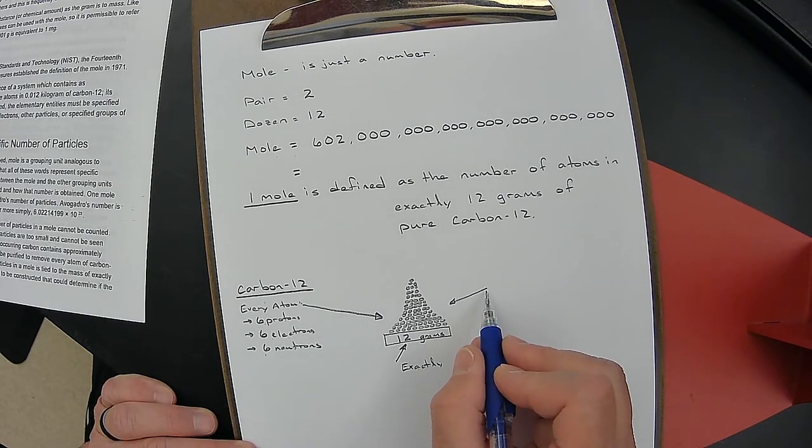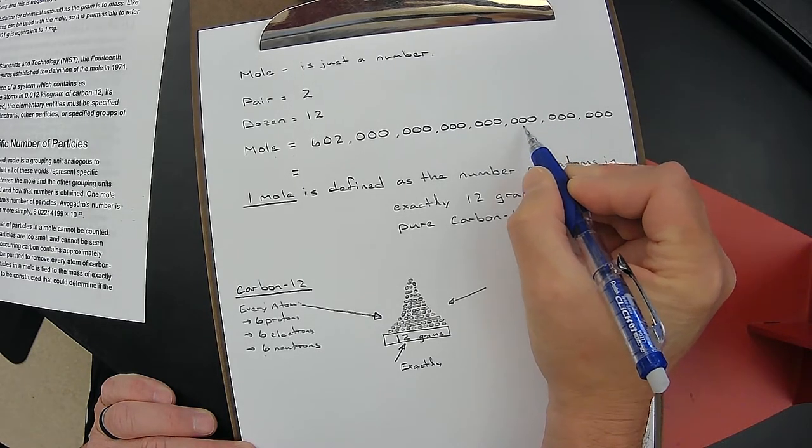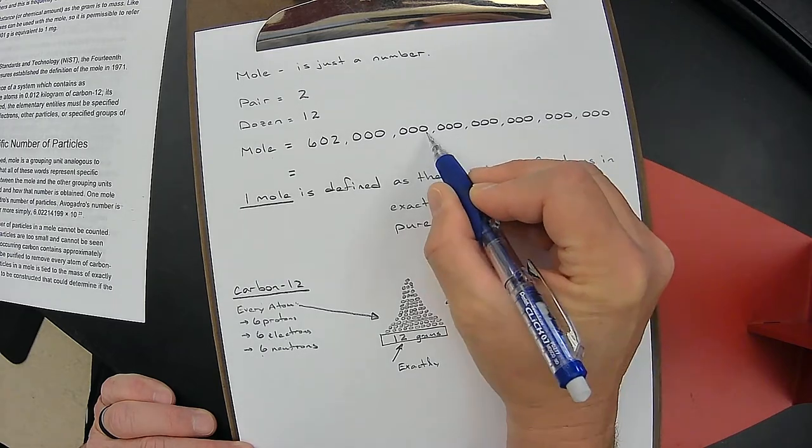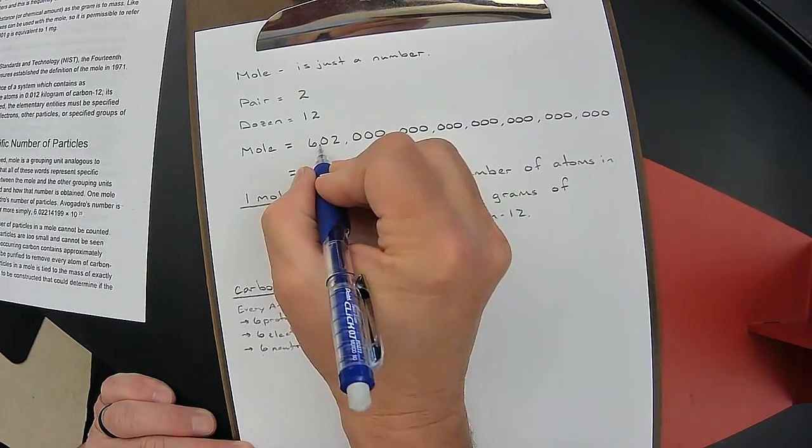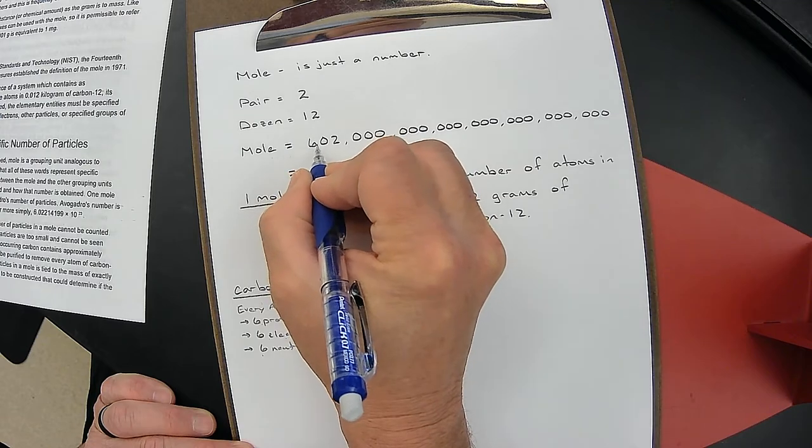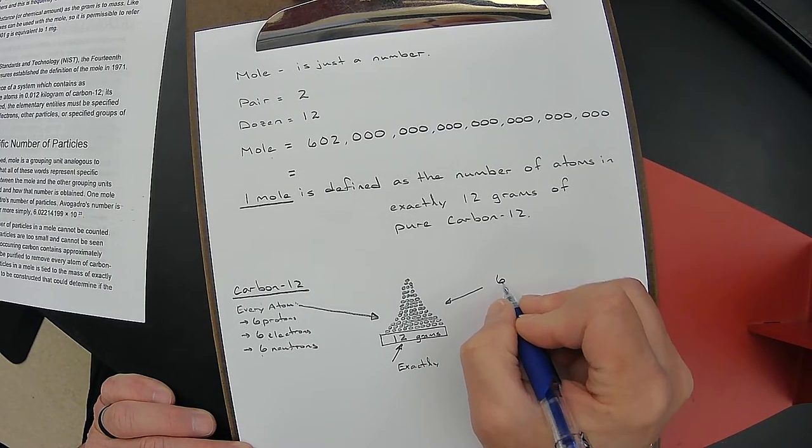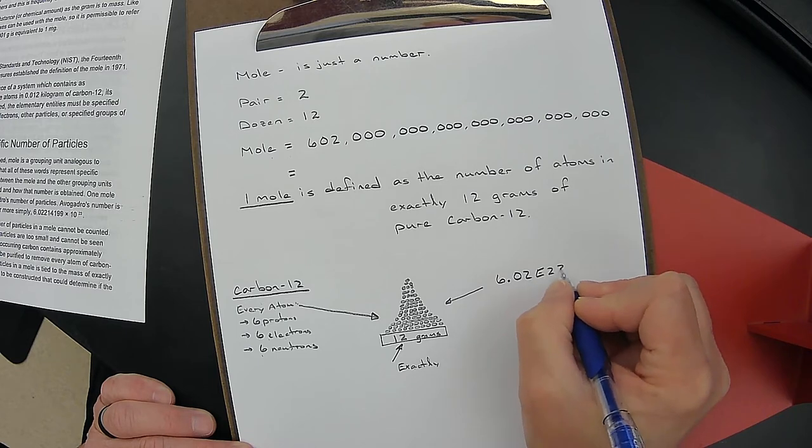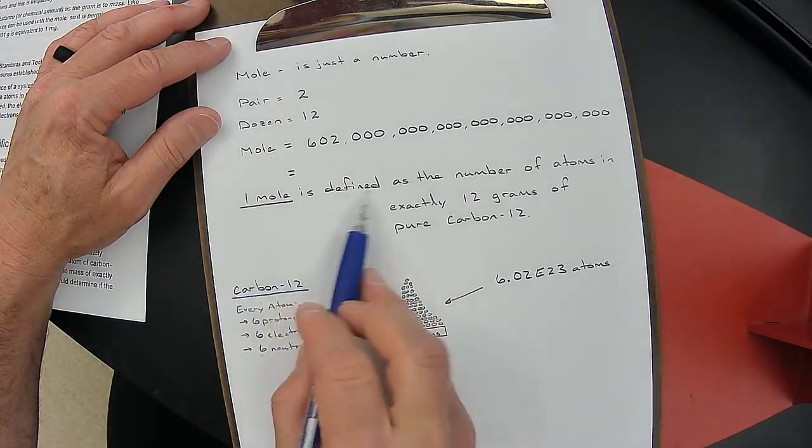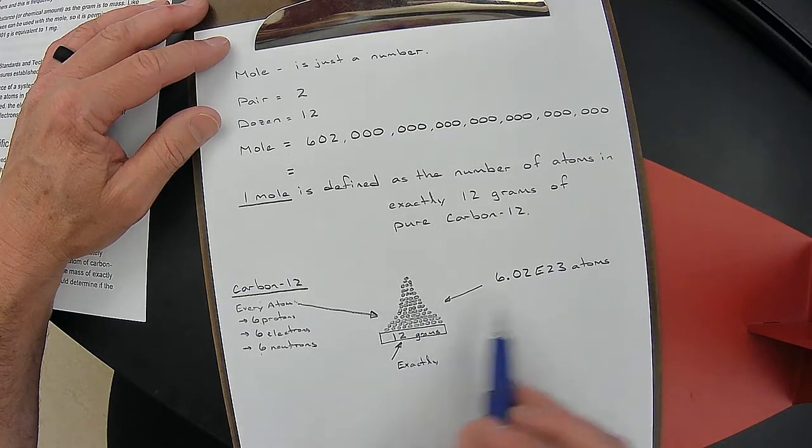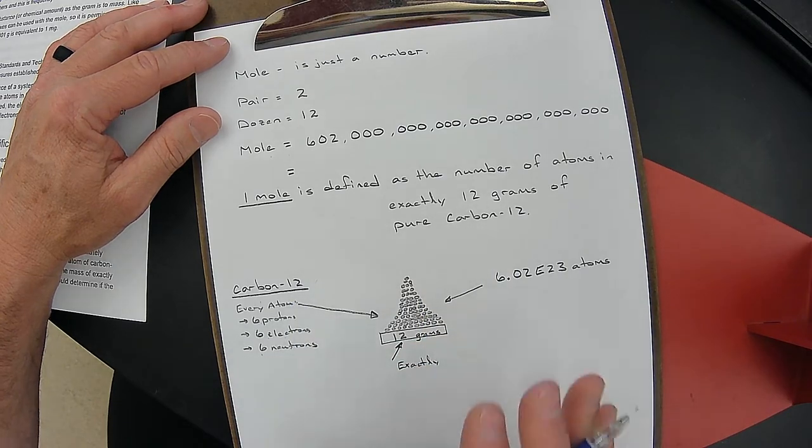If it's okay, I'm going to turn this into scientific notation. So I'm going to move the decimal 23 places. We want the decimal to be just to the right of the first non-zero digit. This ends up being 6.02 times 10 to the 23 atoms. That is the definition of a mole. One mole is defined as the number of atoms in exactly twelve grams of pure carbon-12. It is defined that way. That's how it is defined, one mole.